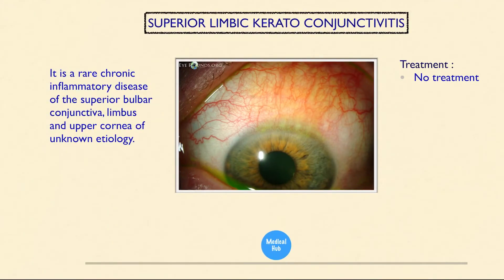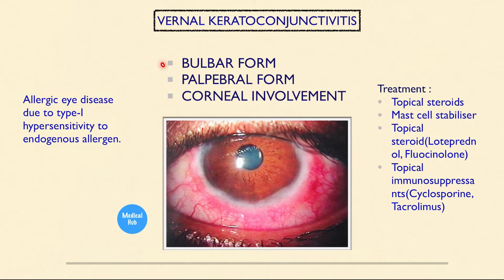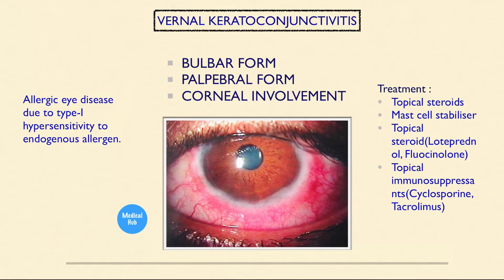This is epidemic keratoconjunctivitis — a viral conjunctivitis caused by a group of adenoviruses. No specific treatment. This is superior limbic keratoconjunctivitis — a rare chronic inflammatory disease of the superior bulbar conjunctiva, limbus, and upper cornea of unknown etiology; no treatment. Vernal keratoconjunctivitis has a bulbar form, palpebral form, and corneal involvement — it is an allergic eye disease due to type 1 hypersensitivity to endogenous allergens.